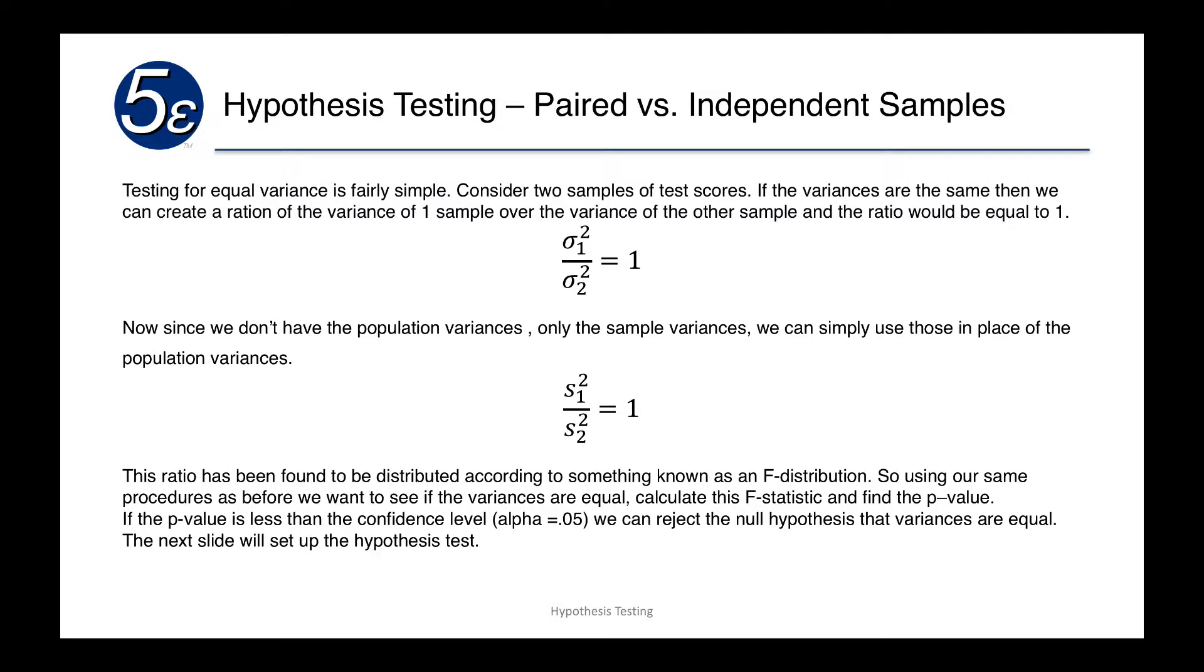So the question is how do we do that? Well, it should be fairly intuitive that if the variances were equal to each other or close, then we could actually take the variance of each one and put them as one as a numerator, the other as a denominator. If they were very close or equal, you would get one.